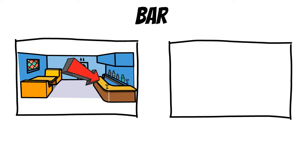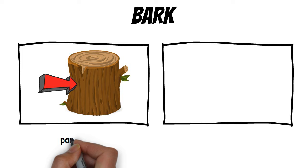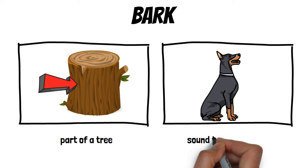Bar: the first meaning is a counter in a pub, and the second is a long piece of metal. Bark: the second meaning is the sound that dogs make.